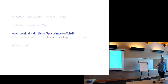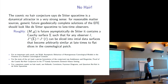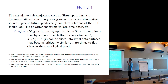Now, hair and topology — two extremely interesting features. First: the cosmic no-hair conjecture, not to be confused with the black hole version. The cosmic no-hair conjecture says that de Sitter spacetime is a dynamical attractor in a very strong sense: for reasonable matter sources, generic future geodesically complete solutions of the Einstein field equations should look like de Sitter spacetime to late-time observers.